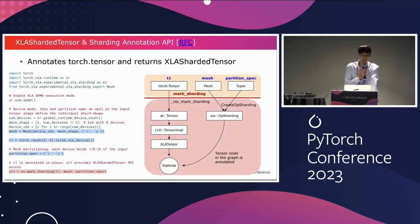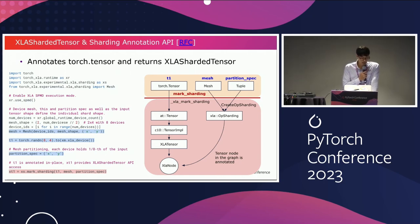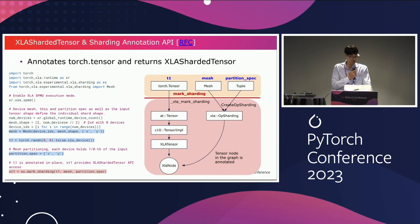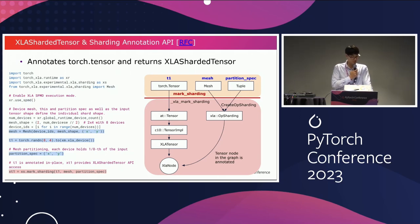The sharding annotation API is the key to using this new feature. It basically takes in a Torch tensor and returns an XLA sharded tensor. The mark_sharding API call takes three inputs: T1, which is the tensor we want to annotate; the sharding strategy; and mesh and partition spec. We use mesh and partition spec to express the sharding intention. In this example, we are sharding the input tensor evenly across a 2x4 logical device mesh.